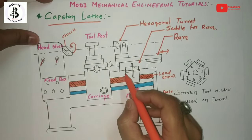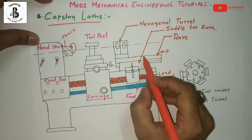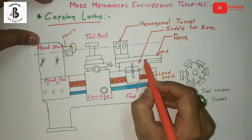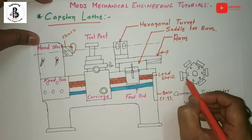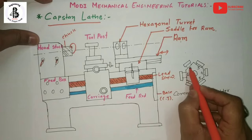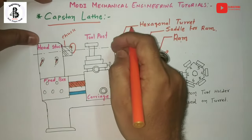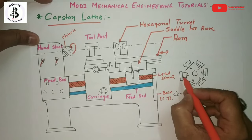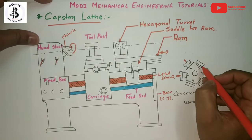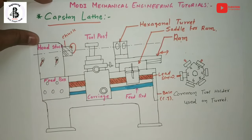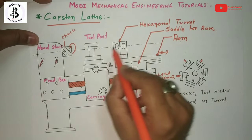In the capstan lathe machine, the turret is mounted on the ram which slides on the saddle, and the turret travel depends on the length of travel of the ram. The hexagonal turret has six faces — one, two, three, four, five, six. According to the required operations, these six faces come into contact with the workpiece material. For example, you can fit a drill tool for drilling, a reaming tool for reaming, or a boring tool for boring operations.